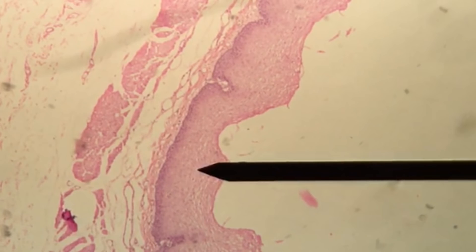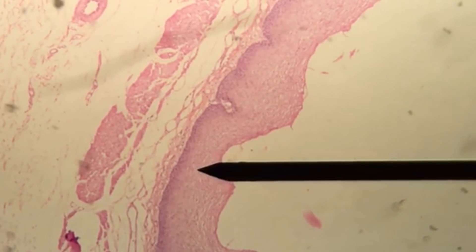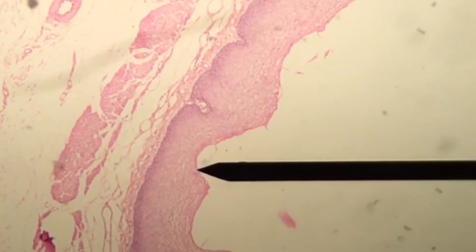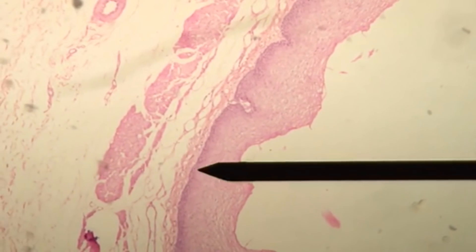We're going to focus on our first layer. This is the mucosa. It is characterized by stratified squamous epithelium. You can see the pointer pointing to all those stratified cells.